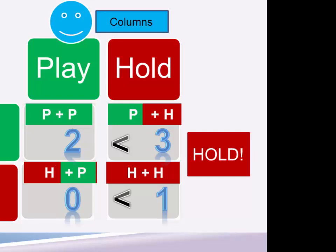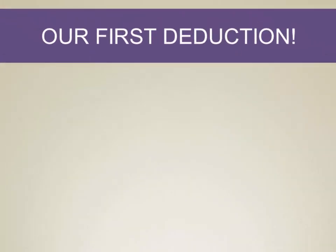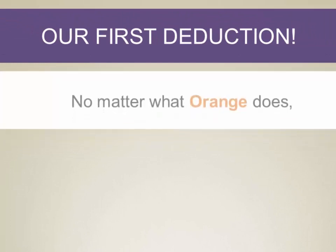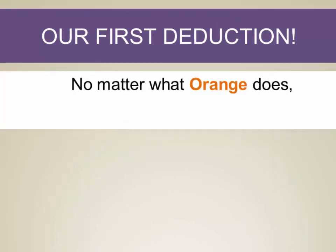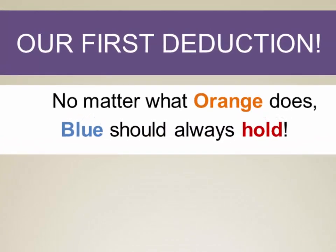So whatever orange does, you should choose to hold — and really, the only thing that you should do in this game is hold your cards. If you do that, you're guaranteed to always get a higher outcome than you would otherwise, based on what orange chooses to do. This is our first deduction from this game: no matter what orange does, blue should always hold.